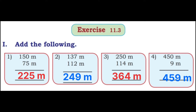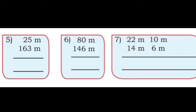Third: 250 m + 114 m. 0 + 4 = 4; 5 + 1 = 6; 2 + 1 = 3. Answer: 364 meters. Fourth: 450 m + 9 m = 459 meters. Fifth: 25 m + 163 m. 5 + 3 = 8; 2 + 6 = 8; 0 + 1 = 1. Answer: 188 meters.